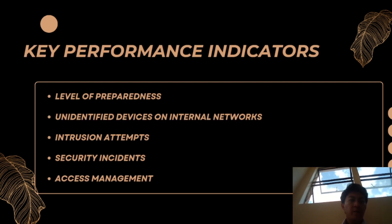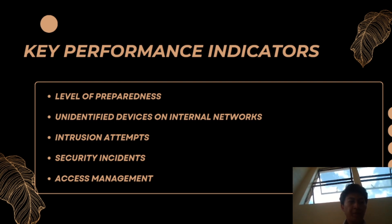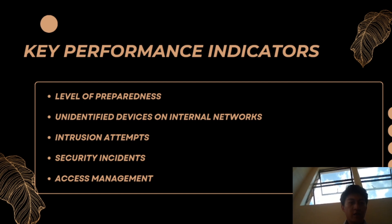There are five security performance indicators when it comes to security metrics. First is the level of preparedness — to keep us prepared and aware of what's happening in the system in real time, we should keep our system monitored at all times to avoid unexpected attacks. Next is unidentified devices on internal networks — monitoring which devices access the network so that unnecessary or potentially harmful devices are observed.